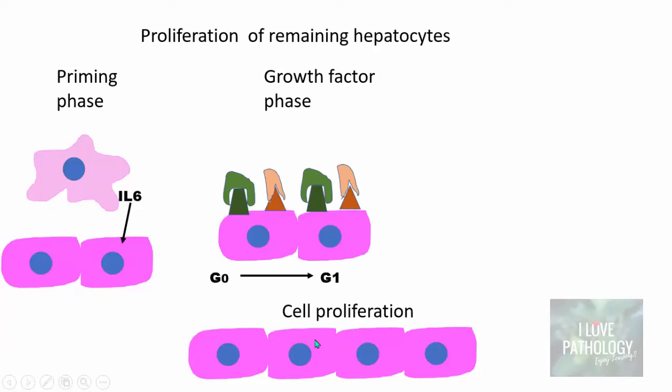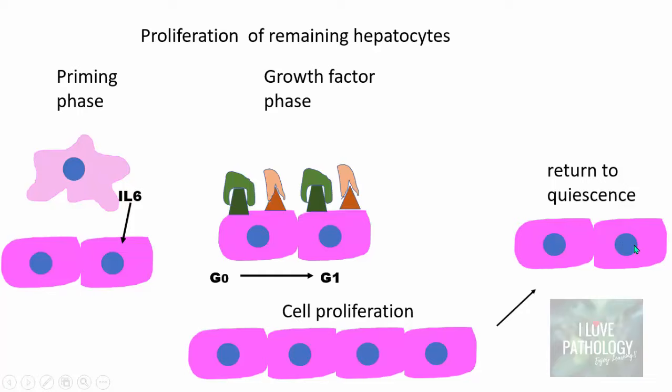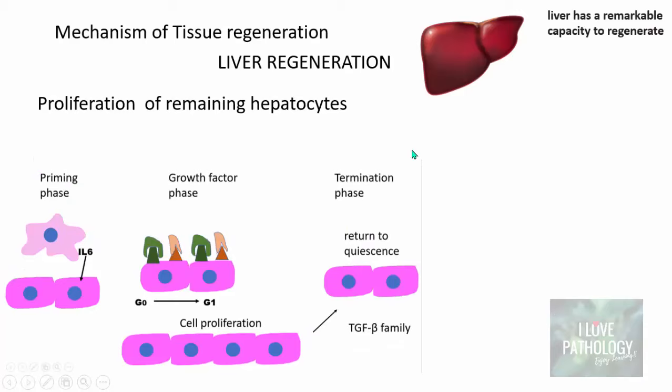After achieving the requisite organ or tissue size, the cells stop proliferating and return to the quiescent stage. This is called the termination phase, and the factors responsible for returning cells to the termination phase are from the TGF-beta family of proteins. So liver regeneration via proliferation of remaining hepatocytes involves the priming phase, growth factor phase, and termination phase.